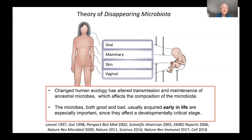On the basis of these kinds of ideas over the last 20 years, I've been developing what I call the theory of disappearing microbiota. This theory has two major tenets. First, that changed human ecology has altered transmission and maintenance of ancestral microbes, which affects the composition of the microbiota. And second, that the microbes — both bad and good — usually acquired early in life, are especially important since they affect a developmentally critical stage.